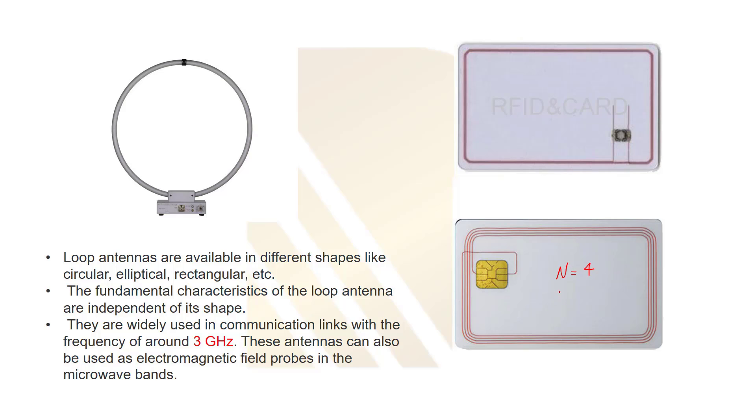Basically this antenna can act as an inductor. I'm not going through the design of the loop antenna, but it's kind of an inductor and we design this based on the radius. We have radius here and space between two metals, and of course turns. These kind of loop antennas are widely used in communication links with the frequency of around 3 GHz.